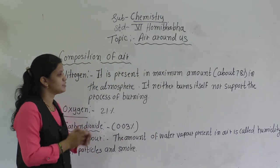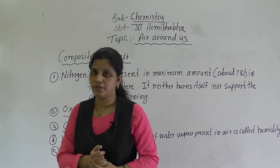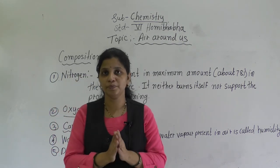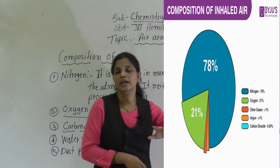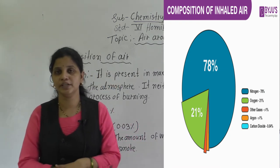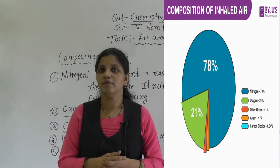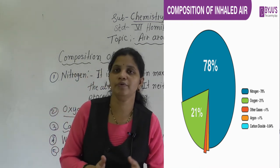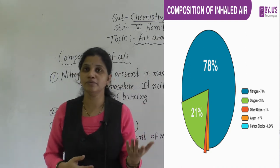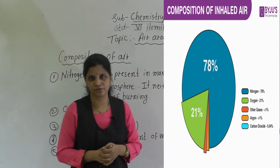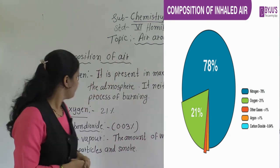Now the next point is nitrogen. How many percentage of nitrogen is present? Oxygen is very essential for us, but nitrogen is present in greater amount. About 78% nitrogen is present in the air. We do not use nitrogen directly — through nitrogen fixation, and by eating fruits and vegetables, we get nitrogen.